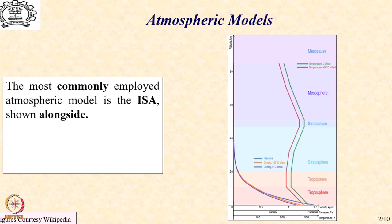As all of us know, the atmosphere is composed of various layers, and this schematic also reflects the various layers which are part of it, starting with the troposphere, going to the stratosphere, mesosphere, and then beyond mesosphere we start getting the ionosphere.